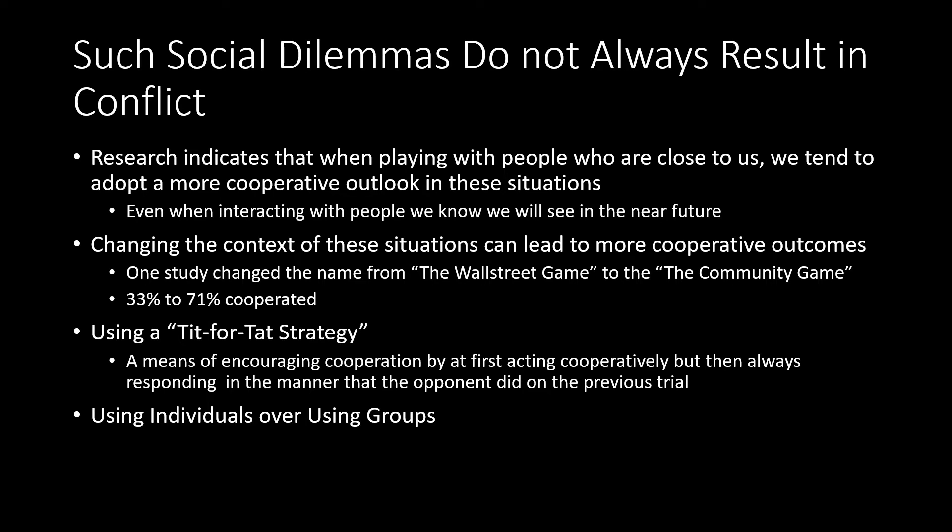In large-scale real conflicts mirroring these situations, allowing individuals rather than groups to make decisions tends to lead to more effective resolution. Groups tend to become polarized and over-exacerbate competitiveness, as that is often a group norm when resolving conflict. Having one member serve as a representative of each group — rather than the whole group negotiating — can reduce this polarization and lead to better resolution.